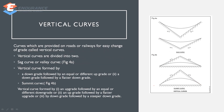Vertical curves are provided on roads and railways for easy change of gradient direction. A summit curve is a crest vertical curve, and a valley curve is formed by a downgrade followed by a flatter downgrade.